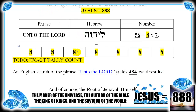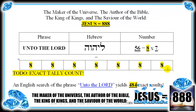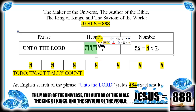For example, an English search of the phrase 'unto the Lord' in the King James Version yields 484 exact results — 484 times in the Bible people are doing things unto the Lord. And the root of Jehovah's name, as we've solved and detailed elsewhere, is 16 exactly. You go to the root for the glory and the truth: 16, perfectly, double of 8.